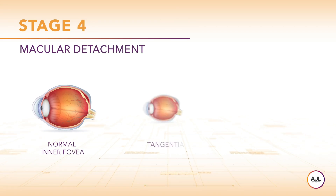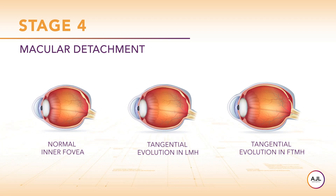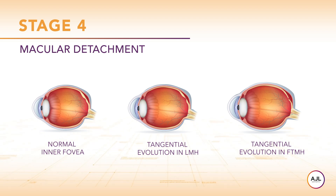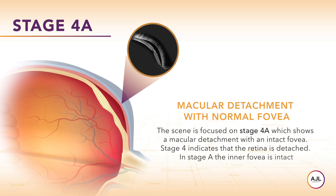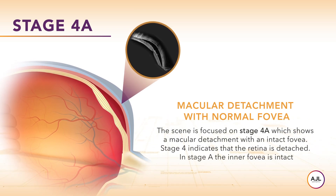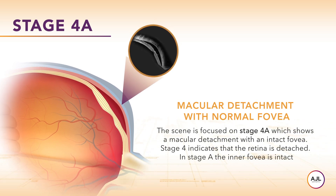The scene represents stage 4, a complete macular detachment without schisis, and shows the tangential evolution from stage A (intact fovea) to B (lamellar macular hole) to C (full thickness macular hole). Notice how the schisis disappears into the macular layers while the retina detaches from the choroid. This is due to the release of intra-retinal traction when the retina detaches. Stage 4a shows macular detachment with an intact fovea. Stage 4 indicates that the retina is detached. In stage A, the inner fovea is intact.